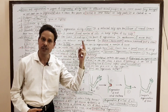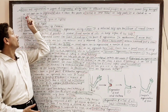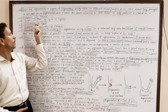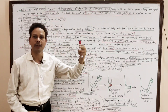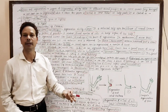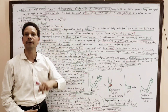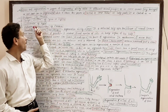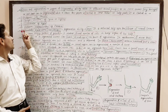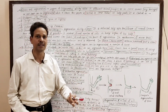In our last lecture, we discussed repair and regeneration in different groups: protozoans, sponges (Porifera), cnidarians — where we gave a suitable example of Hydra — and flatworms (Platyhelminthes), where we explained this process by giving an example of Planaria.